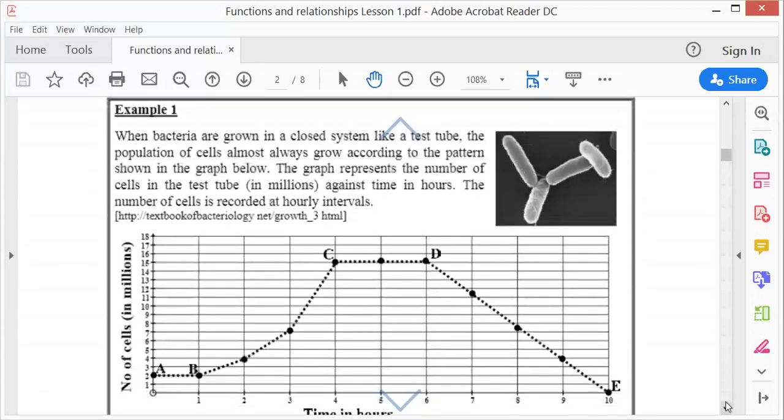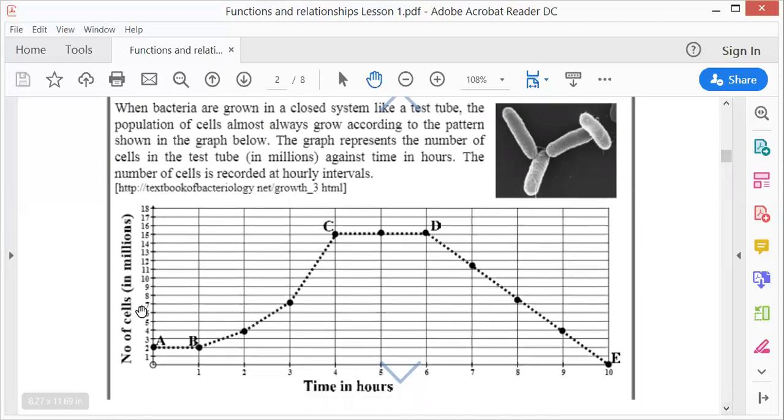Let's do our first example. Here I have, when bacteria are grown in a closed system like a test tube, the population of cells almost always grow according to the pattern shown in the graph below. So that graph represents the growth of the bacteria. It is the number of cells in the test tube in millions against time in hours. So the number of cells is recorded hourly. On the x-axis, number of cells in millions. The one will be 1 million, two will be 2 million, eight will be 18 million. Then time in hours. Remember, time is always on the x-axis. That is the y-axis, sorry, which is the dependent variable. This is the x-axis which is independent. Time is always independent, therefore you will always have time on the x-axis.